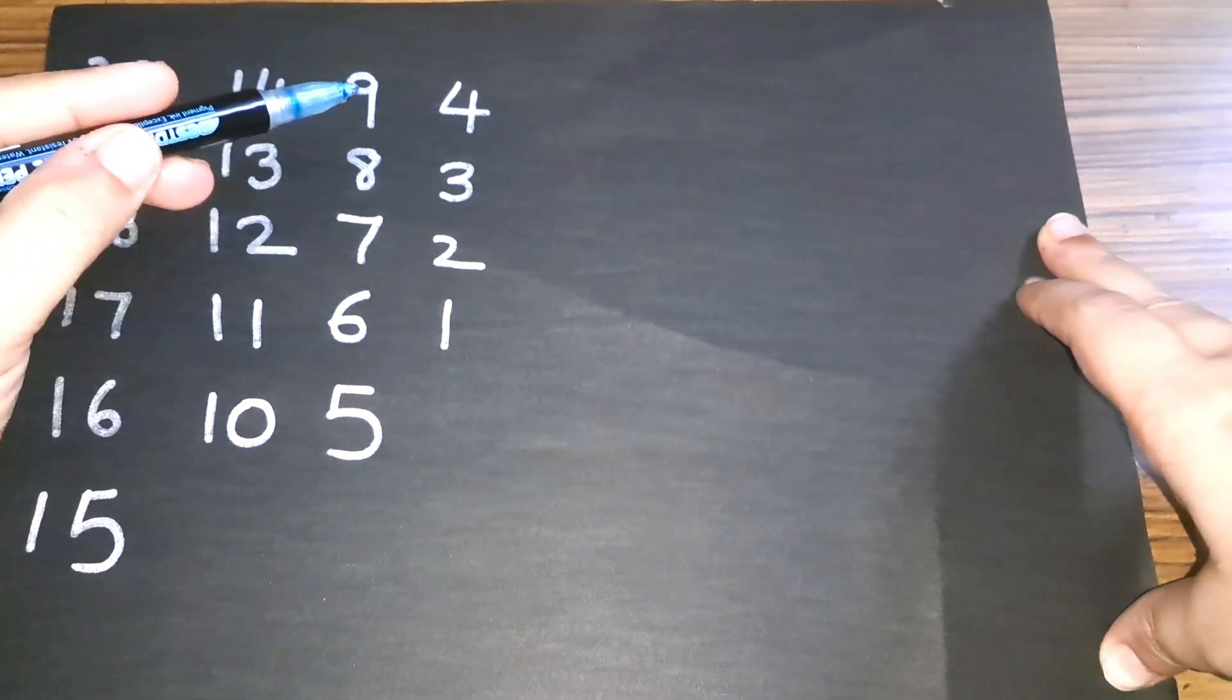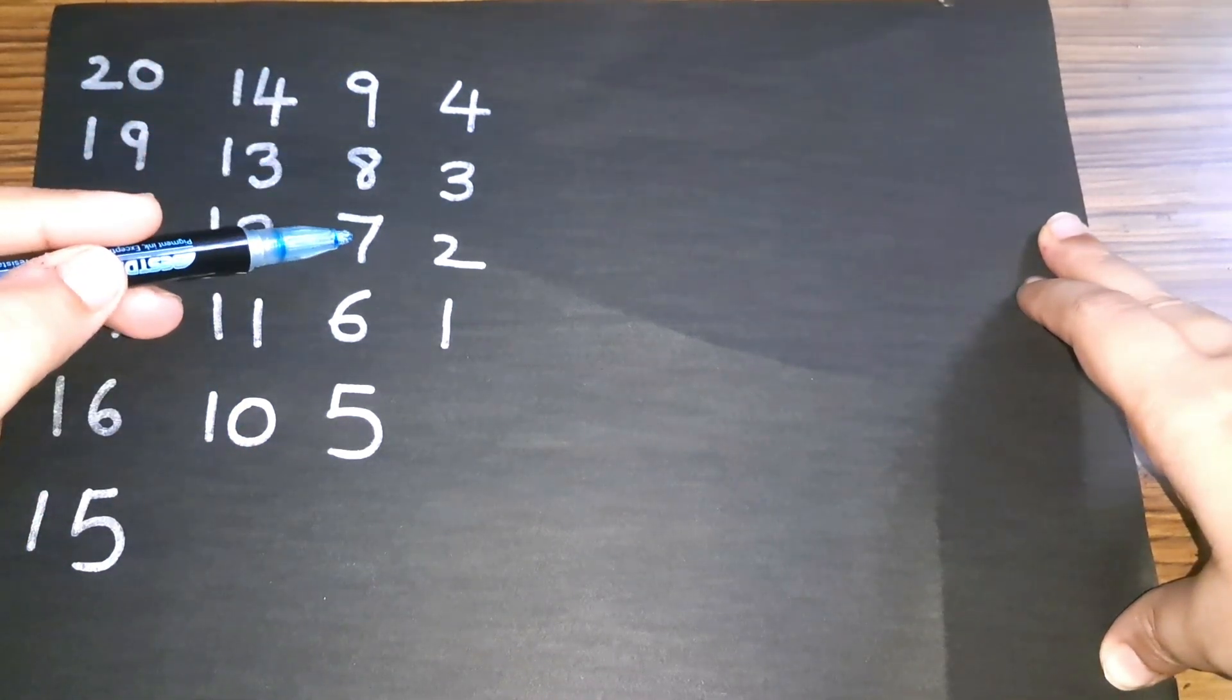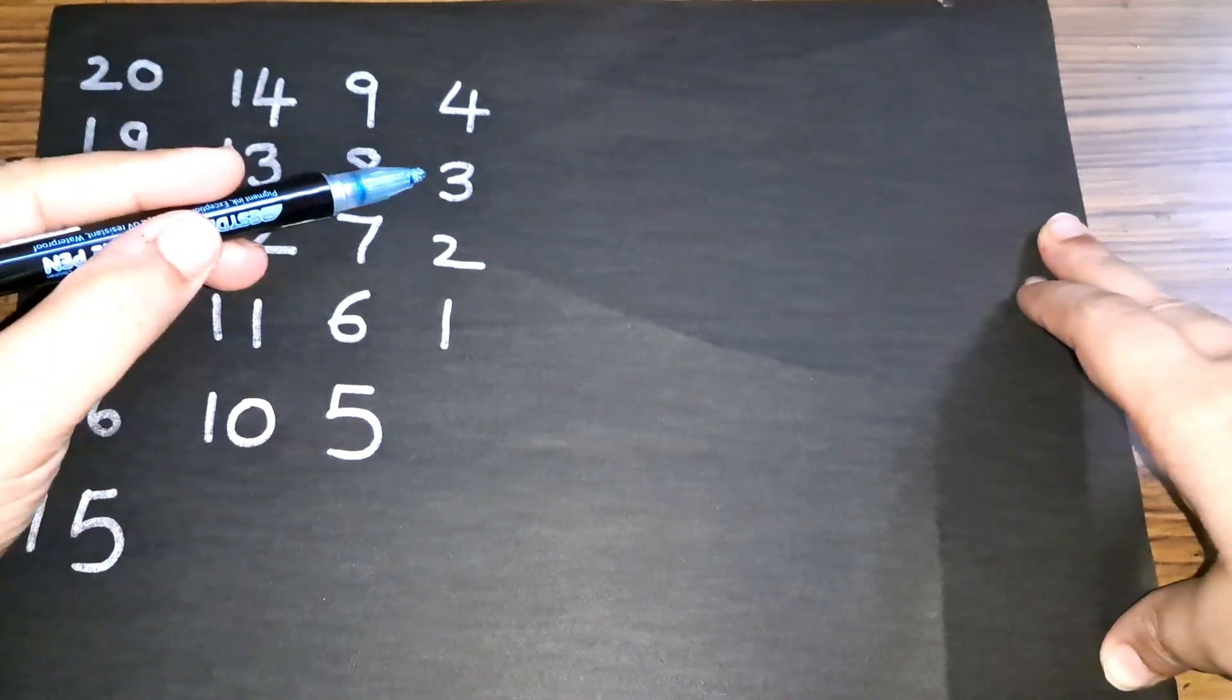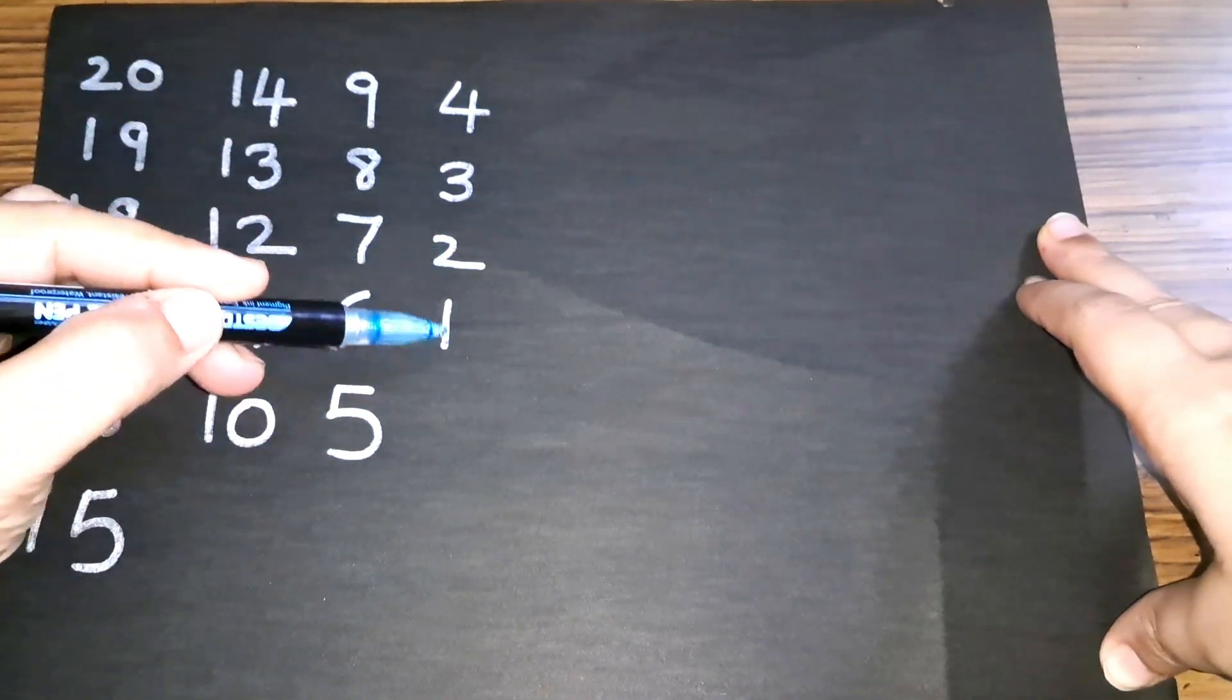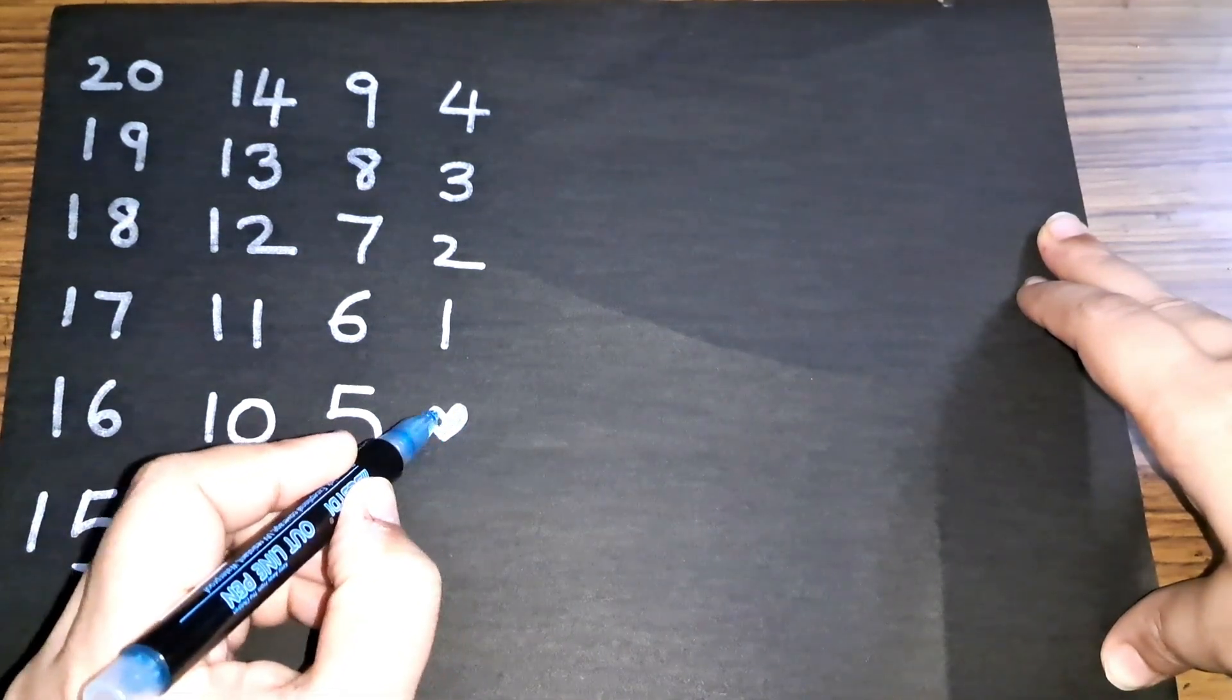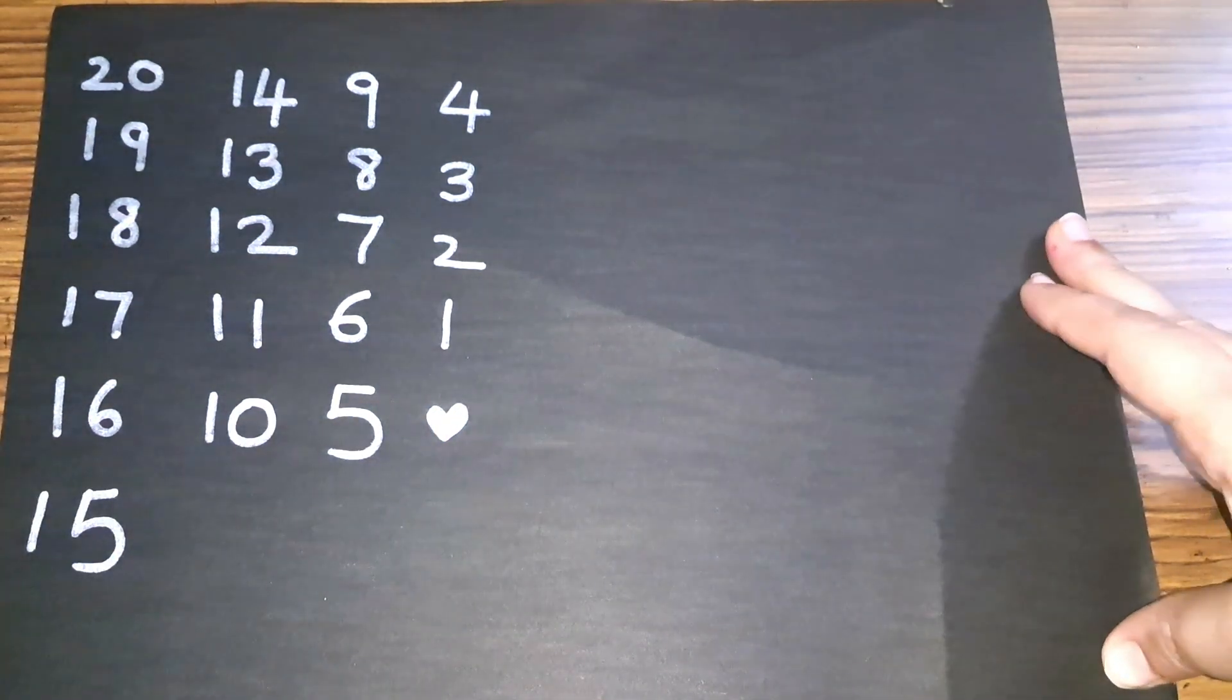10, 9, 8, 7, 6, 5, 4, 3, 2, and 1. This is backward counting. Now let us do some forward counting.